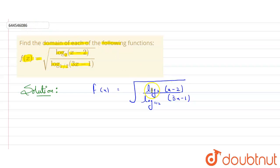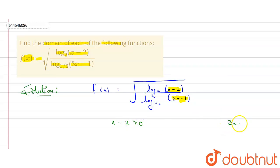This function f(x) will be defined if the values inside the logs are greater than 0, because we cannot have negative values inside a log. So x minus 2 must be greater than 0 and 3x minus 1 must be greater than 0. This gives x greater than 2, and x greater than 1/3.